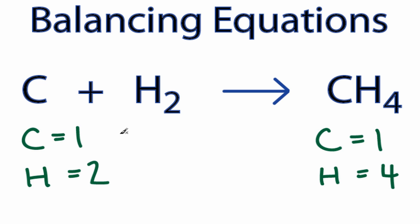Since I only have two hydrogens here and four here, I'm going to put the coefficient 2 in front of the H2 molecule. So now I have one carbon on this side, but 2 times 2, I have four hydrogens.